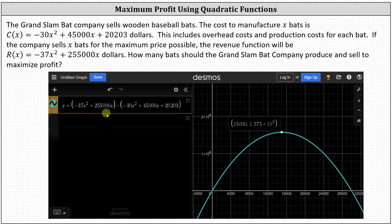The graph of the profit function is shown on the right. And notice we can verify that the vertex does have an X coordinate of 15,000 and the Y coordinate, while it doesn't show as many decimal places, we have 1.575 times 10 to the ninth, which does verify our maximum profit is also correct. I hope you found this helpful.